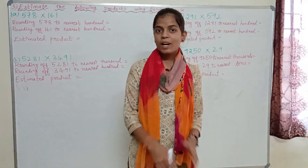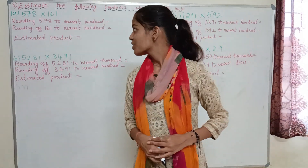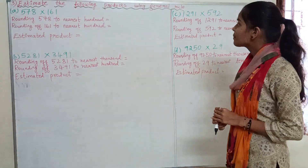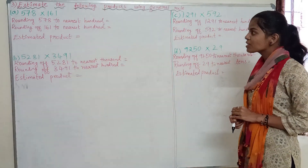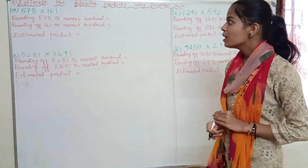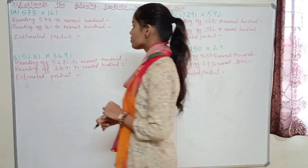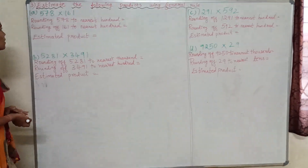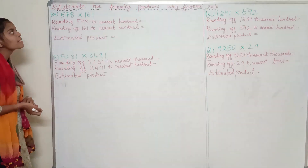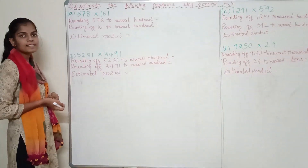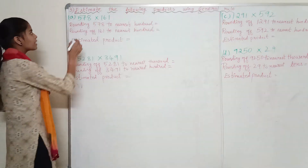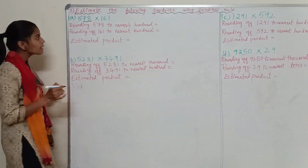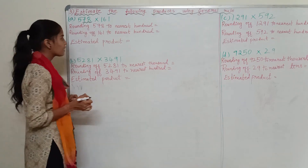Coming to our third question: estimate the following products using the general rule. The first question is 578 × 161. We will round off 578 to the nearest hundred.